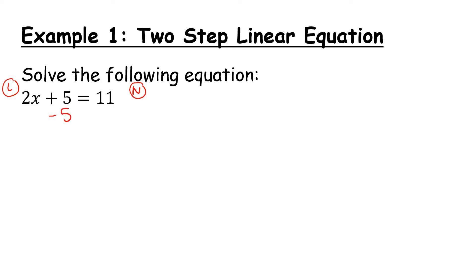Now, am I allowed to just take away a 5? Well, remember, these are equations. It's all about balance. So as long as I balance it by also subtracting a 5 from the other side, that's perfect. So we end up here with 2x equals 11 minus 5, which is 6.